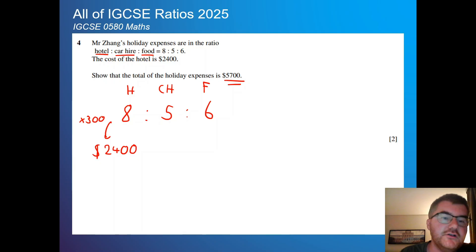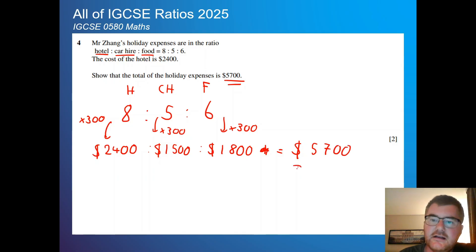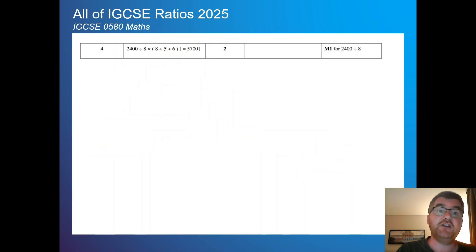So what do I multiply 8 by to give me 2400? Well, I'm going to multiply it by 300. 5 times 300, that's going to be $1500. 6 times 300, that's $1800. If I add all of those together, $3900, $4700, $5700, which is then the total cost for our two marks. Structure is very important with these ratio questions.